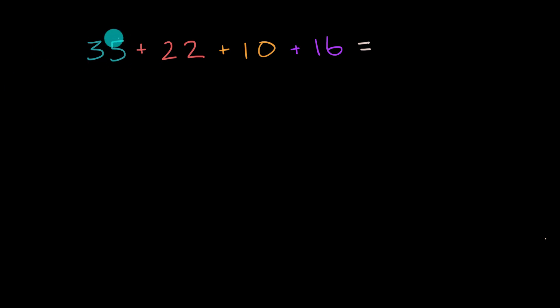For example, when we look at 35, we have three tens and five ones. Three tens right over here, that's the same thing as 30. So you could view 35 as 30 plus five.